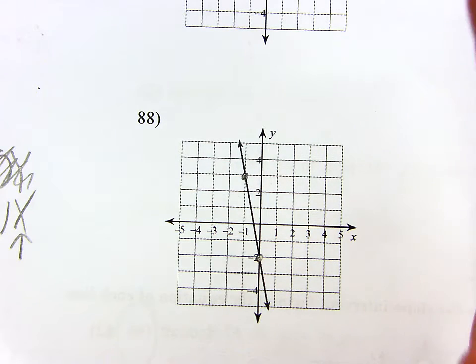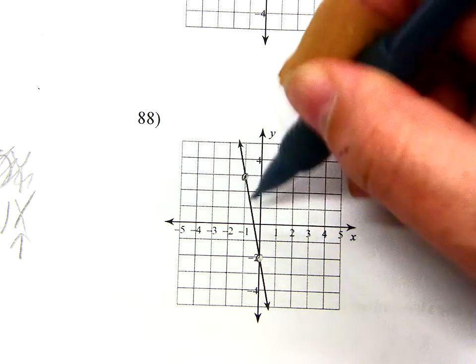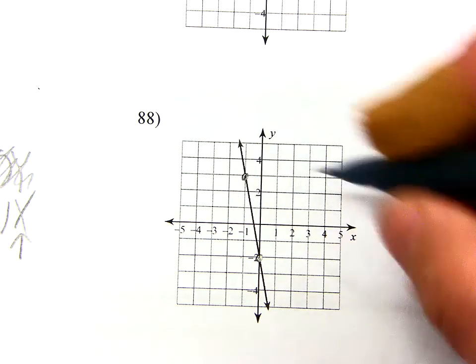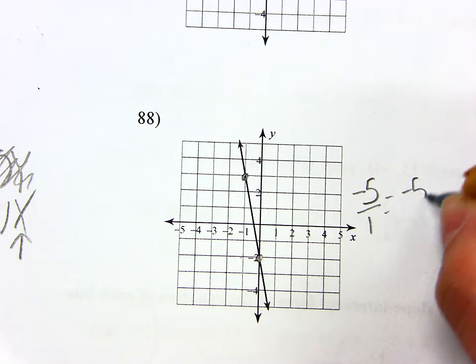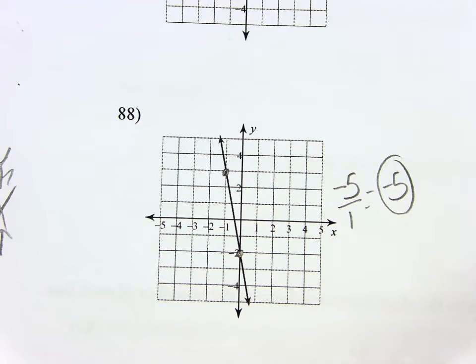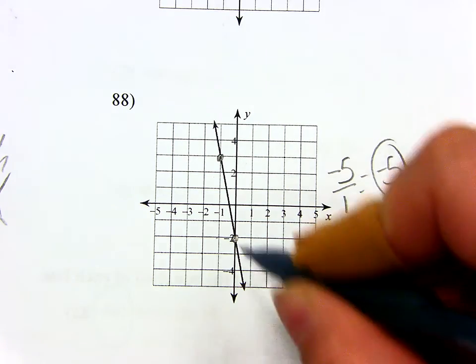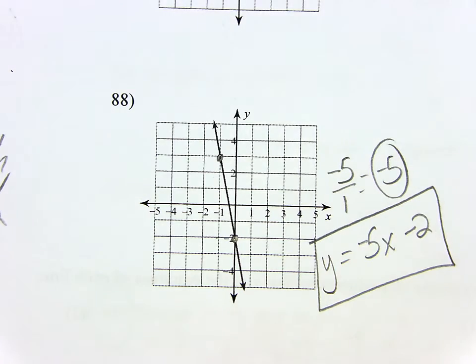So make sure that when you're finding the slope, you're always going from left to right. Don't go backwards. So from left to right, I'm going down 1, 2, 3, 4, 5 to the right 1. So my slope is negative 5 over 1, or just negative 5. Right? So when I put all the pieces together, Y equals MX, and then B is a negative 2. There's my equation.